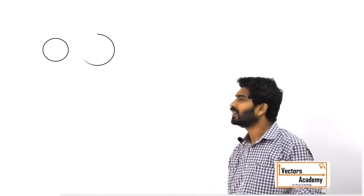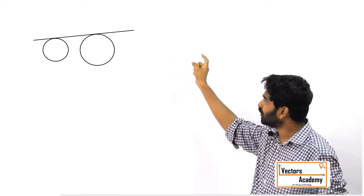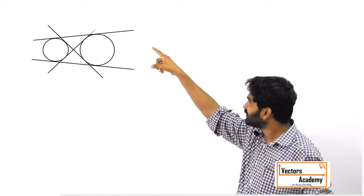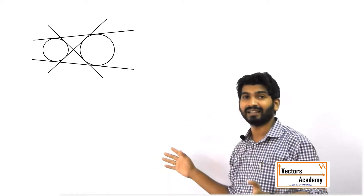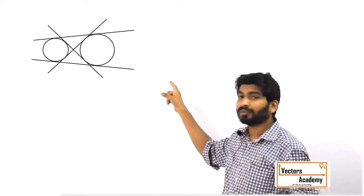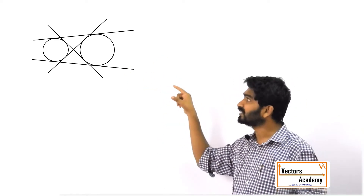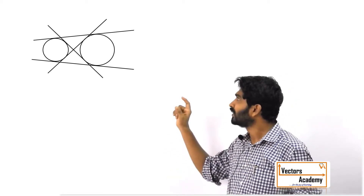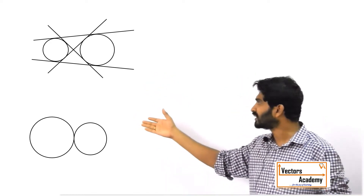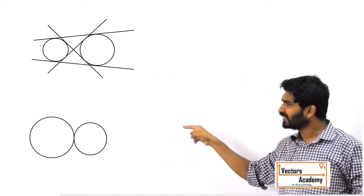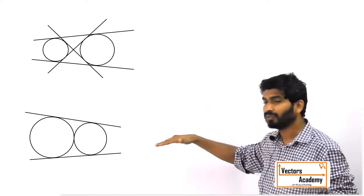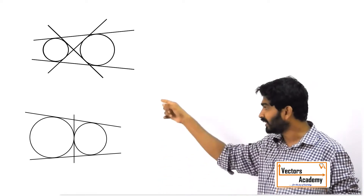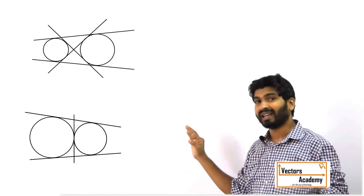One type of question asked in JEE is: how many common tangents can be drawn to two circles? For two separate circles, there can be 4 tangents — one at the top, one at the bottom (called direct common tangents), and two crossing tangents (called transverse tangents). However, if the circles are touching each other externally, the number of common tangents is 3: two direct common tangents and one transverse tangent between them.